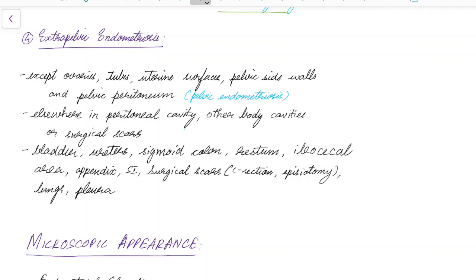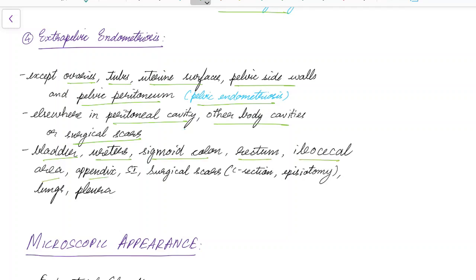Pelvic endometriosis refers to endometriosis occurring in the ovaries, tubes, uterine surfaces, pelvic side walls, and pelvic peritoneum. Extra-pelvic endometriosis occurs in places other than these. Common sites include the bladder, ureter, sigmoid colon, rectum, ileocecal area, appendix, small intestine, surgical scars from caesarean section and episiotomy, and the lungs and pleura.